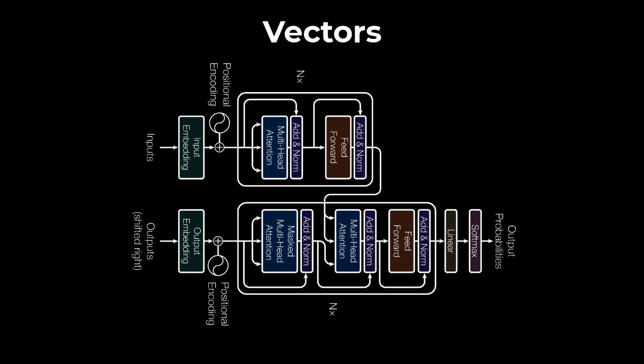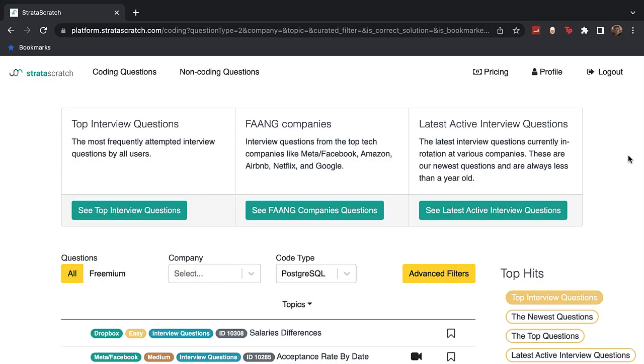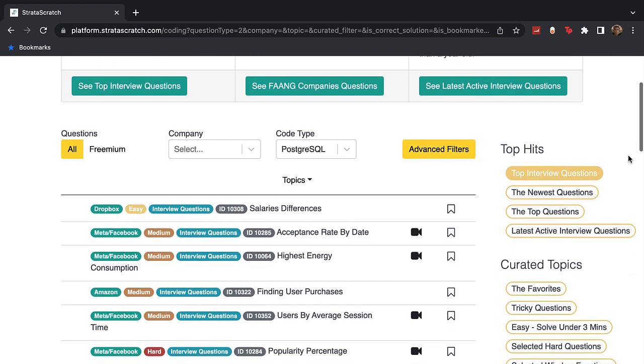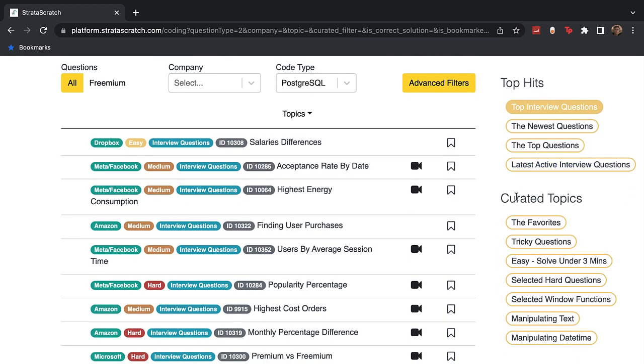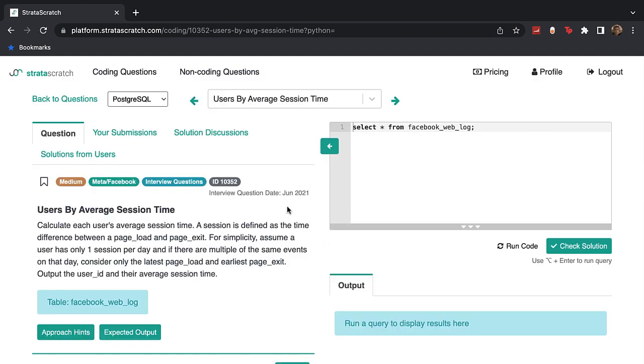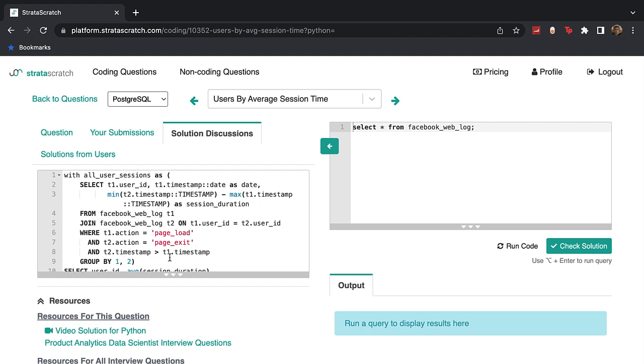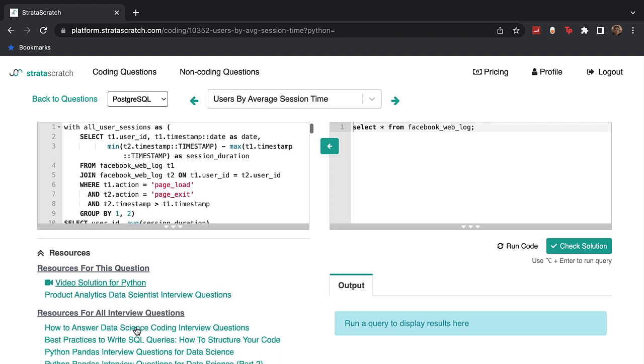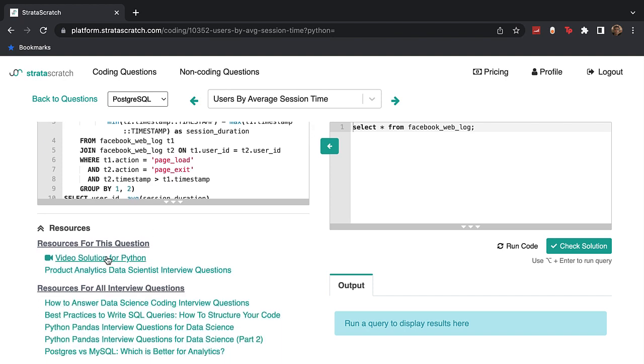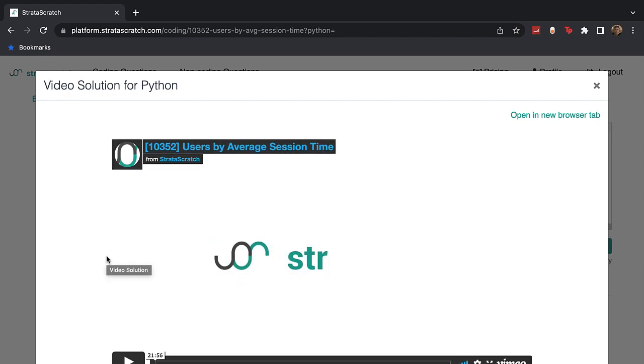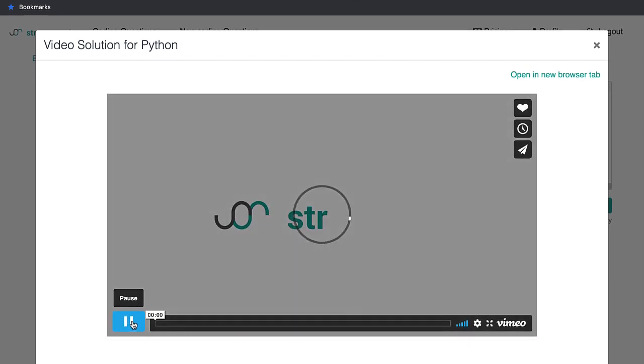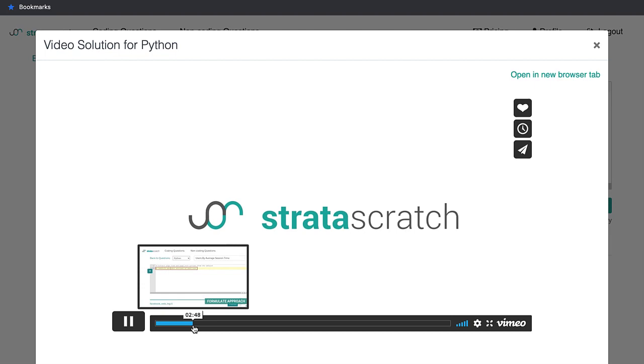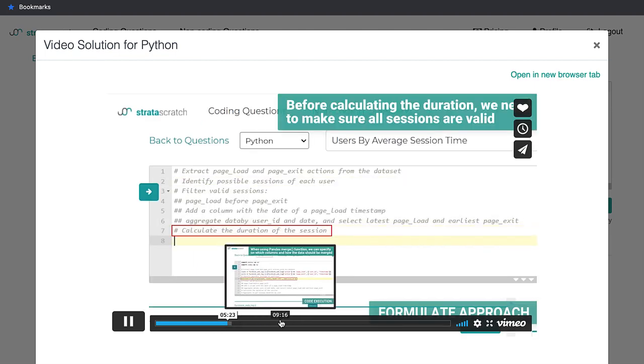Before starting our discussion on vectors, I want to talk about this video's sponsor, Strataskratch. Strataskratch is a data science interview prep website that provides thousands of interview questions from the hottest companies. The best way to learn anything is to break down the solution as much as possible. Just like how we're going to understand transformers in this video through understanding vectors, Strataskratch does a great job in breaking down a good amount of these interview questions with videos, blogs, and solutions from the community.